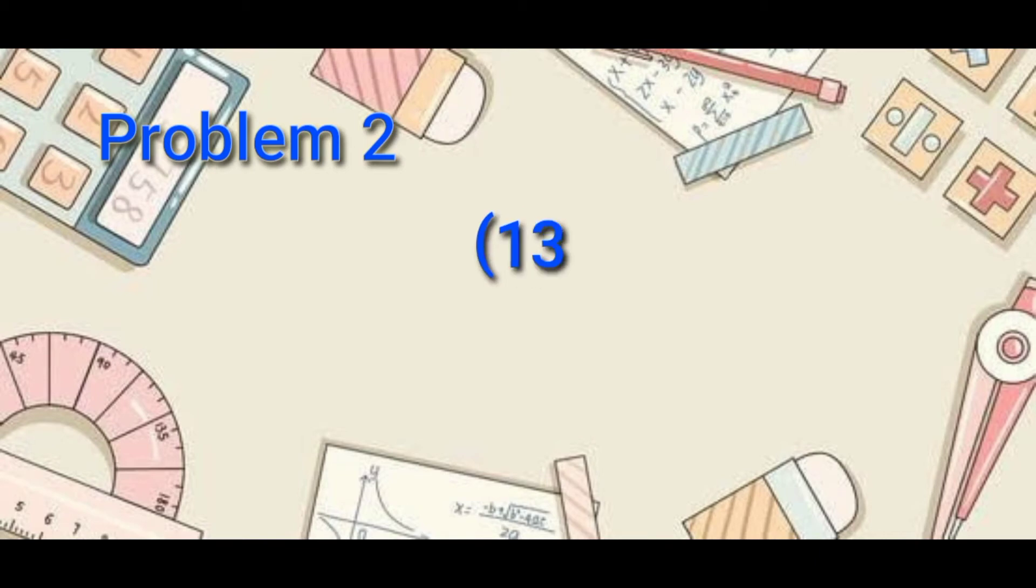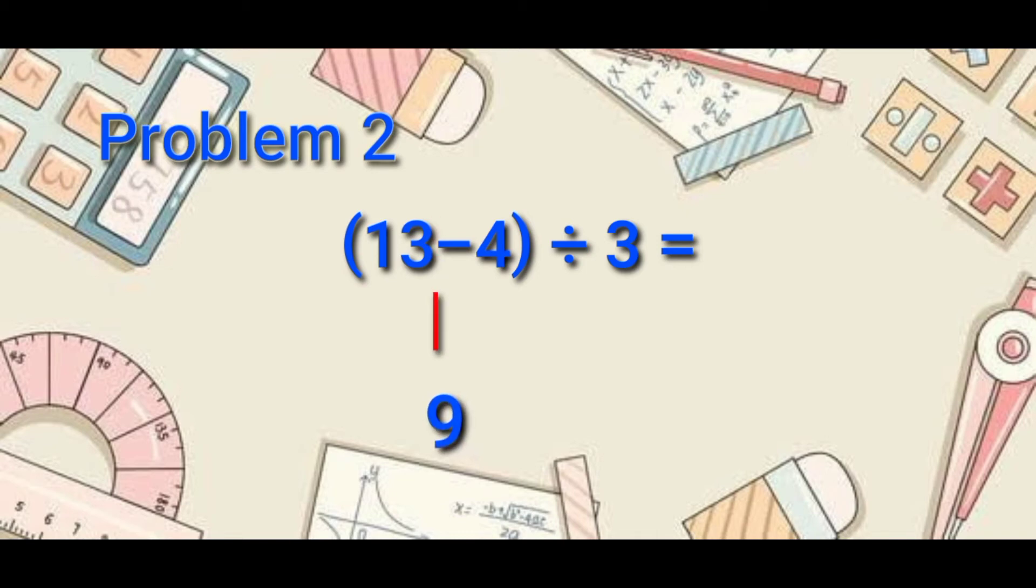Problem number 2: Open parenthesis 13 minus 4 close parenthesis divided by 3 equals. First, let's solve what's inside the parenthesis or the grouping. 13 minus 4 equals 9. Then let's divide it by 3. So the answer is 3.